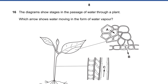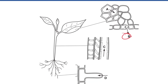Question 16: The diagram shows stages in the passage of water through a plant. Which arrow shows water moving as water vapor? That means transpiration — moving outside the cell, which is B. Arrow D is from soil into root (liquid), inside the xylem is not vapor, and inside the cells is not vapor.